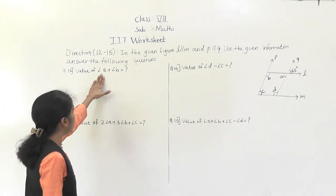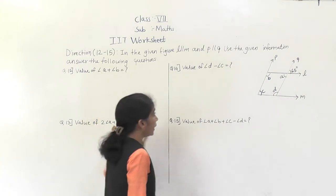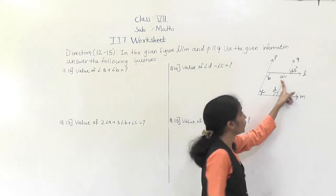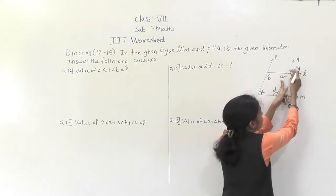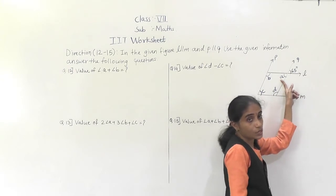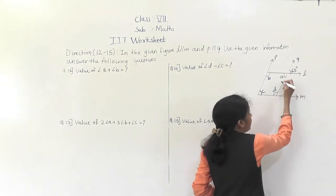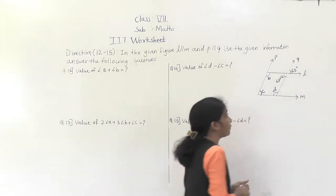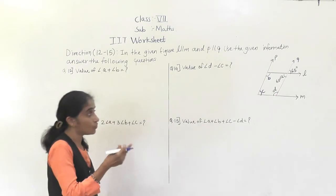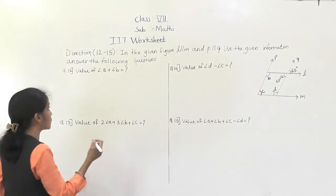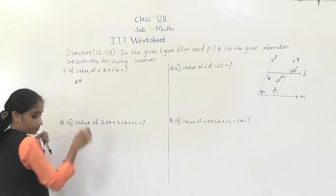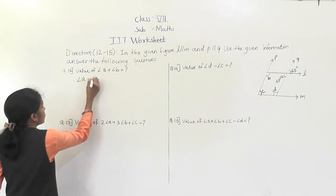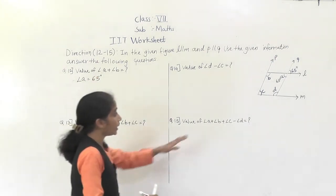Question 12: find the value of angle A plus angle B. First we need to find angle A. If we observe this figure, angle A is the vertically opposite angle to 65 degrees. So angle A is equal to 65 degrees.